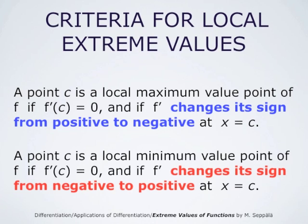As a summary: a point c is a local maximum value point of a function f if f' at c is 0 and if f' changes its sign from positive to negative at x equals c. Likewise, the point c is a local minimum value point if f' at c is 0 and if f' changes its sign from negative to positive at x equals c. When finding the extreme values of a differentiable function f on a closed interval, one proceeds as follows: first compute the derivative of f, then find the points in that interval where the derivative takes the value 0, evaluate f at those points and at the endpoints of the interval, and then simply choose the largest and the smallest of these values — these are the extreme values of that function on the given interval.